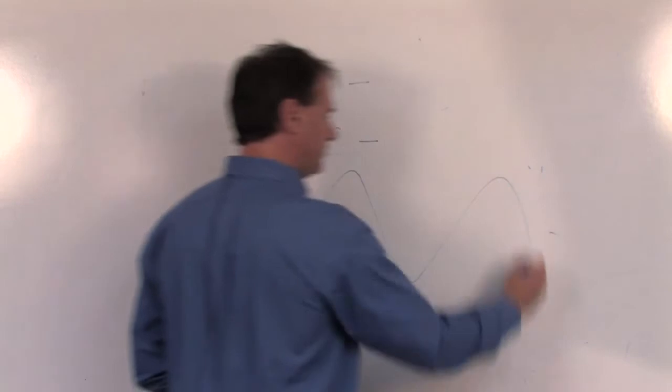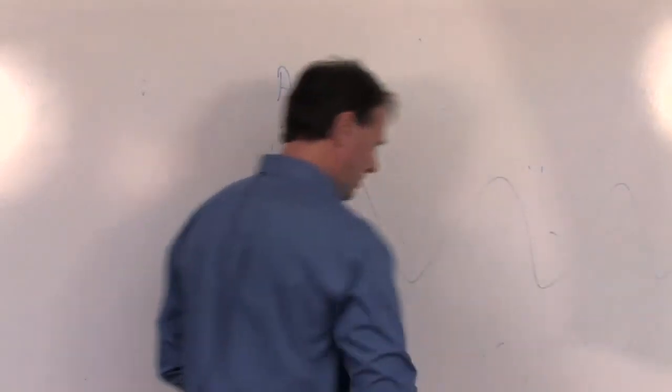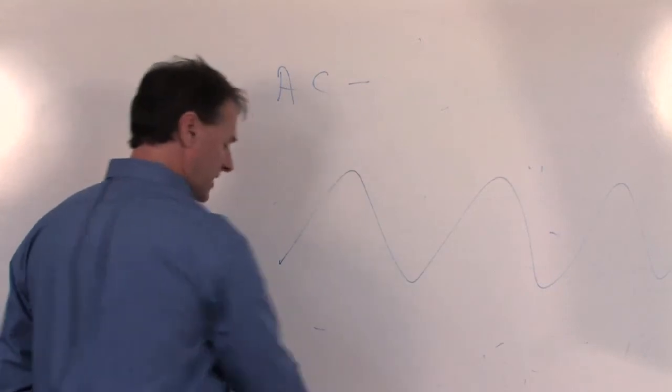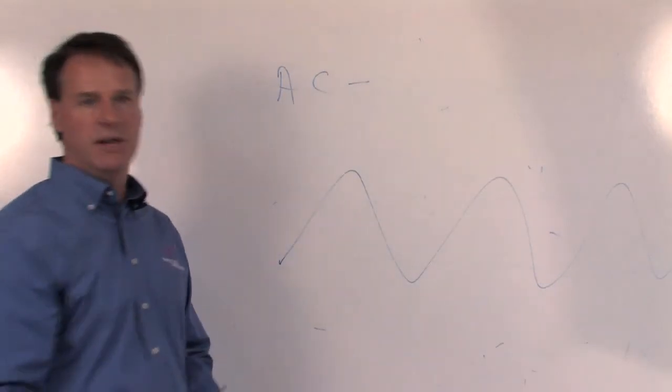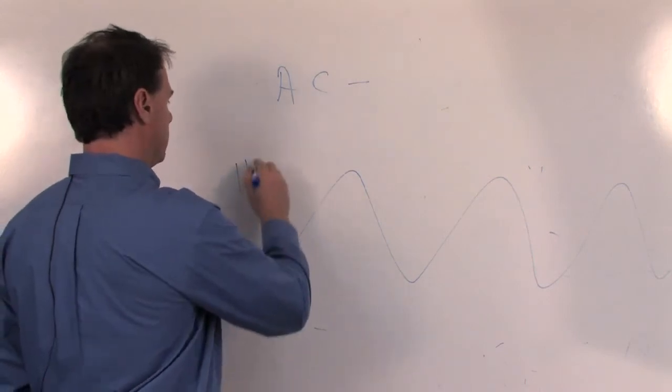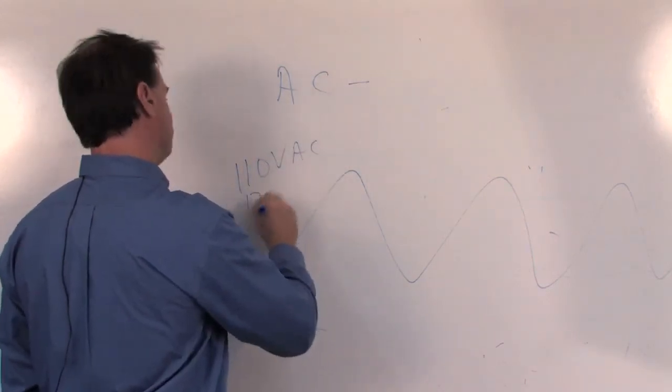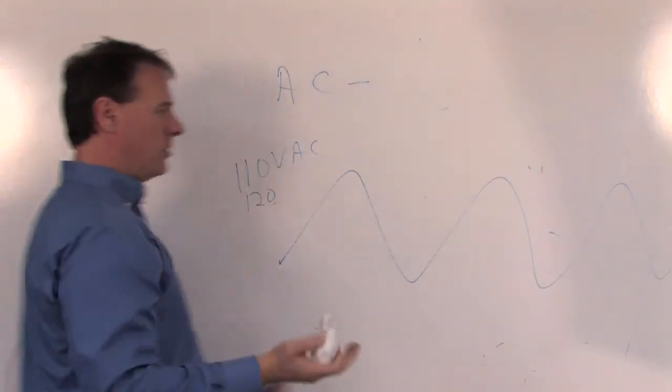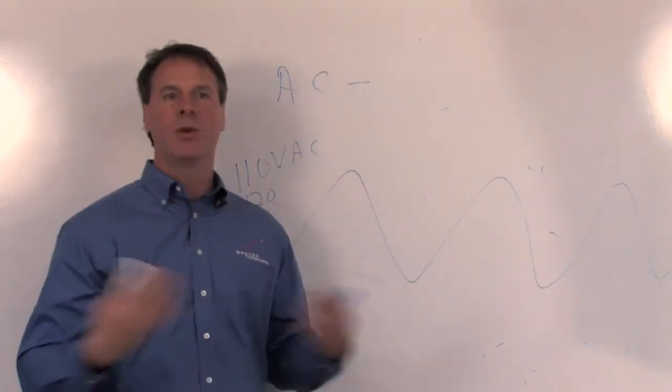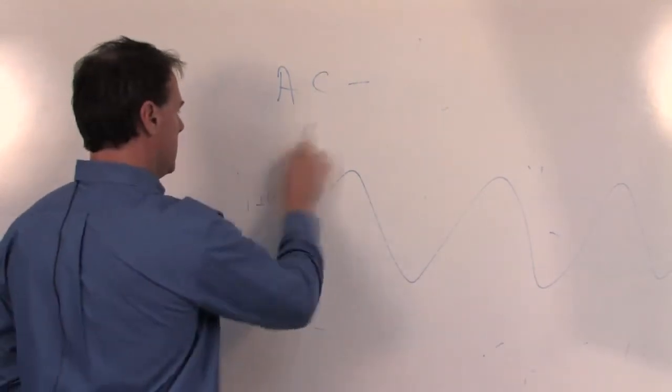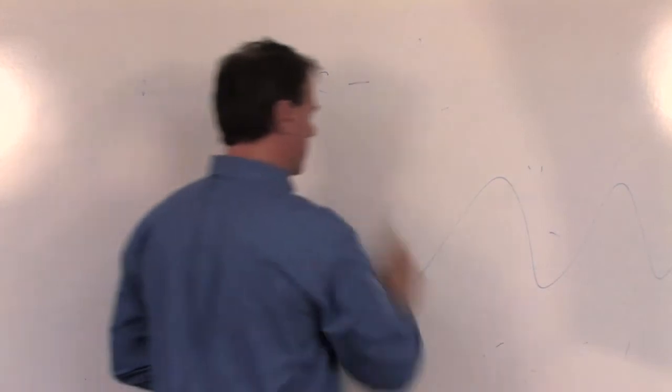Alternating current comes from the utilities, and the most common voltage is 110 or 120 volts AC. The only reason you need to know any of this is because our components are rated accordingly and they're used according to this kind of thing. The other type of electricity is direct current, DC.